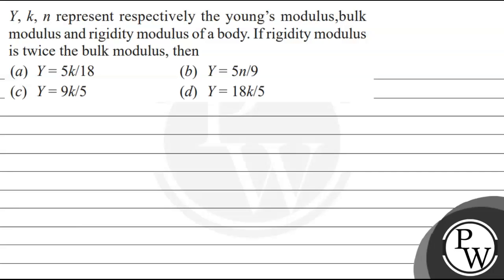Let's read this question. Y, K, and eta represent respectively the Young's modulus, bulk modulus, and rigidity modulus of a body. If rigidity modulus is twice the bulk modulus, then the options are: Y equals 5K/18, Y equals 5η/9, Y equals 9K/5, or Y equals 18K/5.